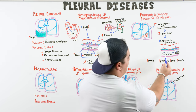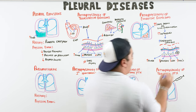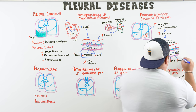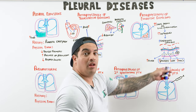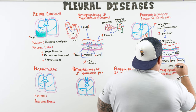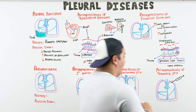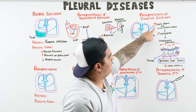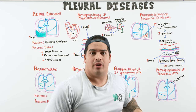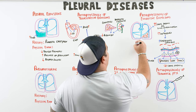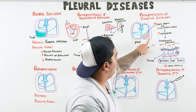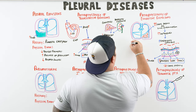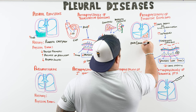The next question is: what's causing the lung injury or parenchymal inflammation? There are many causes. The most common is a parapneumonic effusion — fluid that develops as a result of pneumonia. That's probably the most common cause of an exudative pleural effusion.